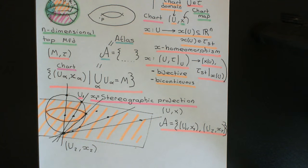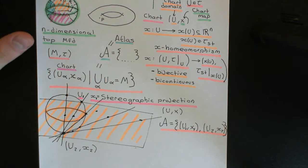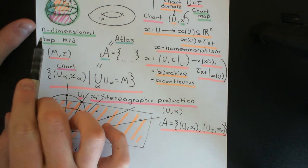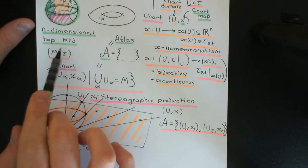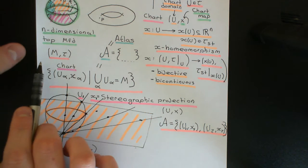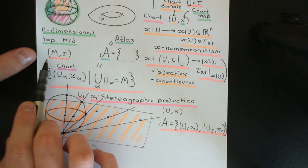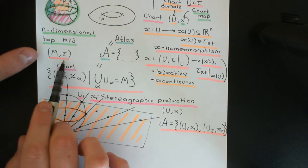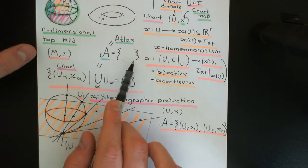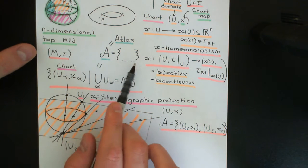Welcome back to this next video in which we are discussing topological manifolds. In the previous video, what we saw is the definition of an n-dimensional topological manifold. An n-dimensional topological manifold is a topological space for which it is possible to define an atlas.